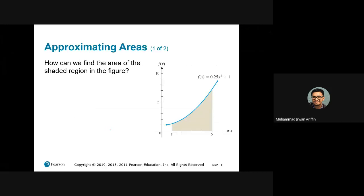We're going to use this example of approximating areas to introduce you to the concept of definite integral, because we can use definite integral to find areas — such as the area under this curve of f(x), under the function 0.25x² plus 1, between x equals 1 and x equals 5. So let's say this is the shaded region and we are interested to find the area.